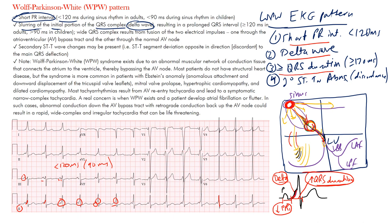The main features are: short PR interval, delta wave, and QRS duration that tends to be at least 120 milliseconds. Regarding ST-T wave abnormalities and discordance: the main QRS deflection is mostly negative here, going downward, and then you have ST elevation and an upright T-wave — going in the opposite direction. That's what we mean by discordance: negative QRS and then positive ST-T. Not always seen, but something to keep in mind.